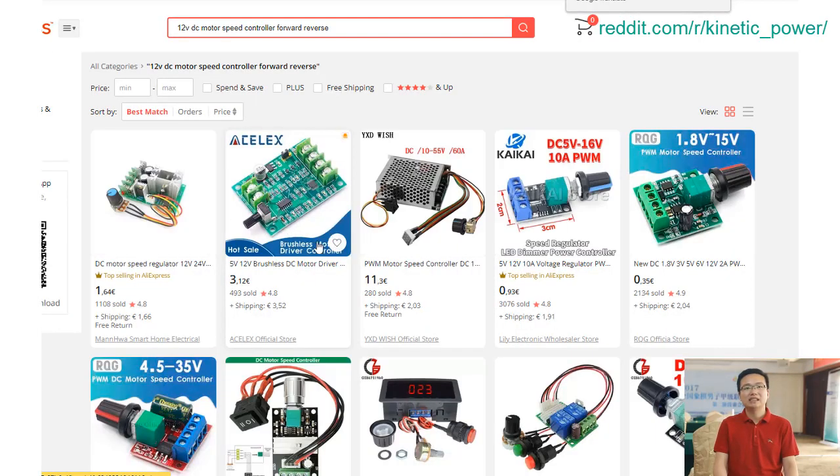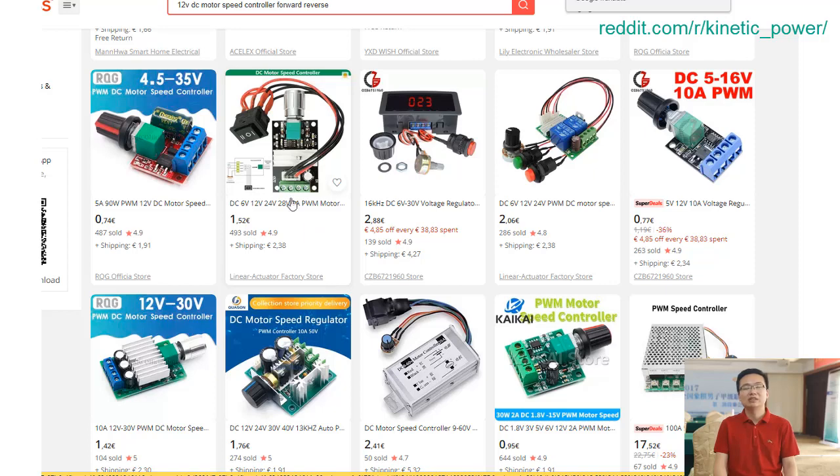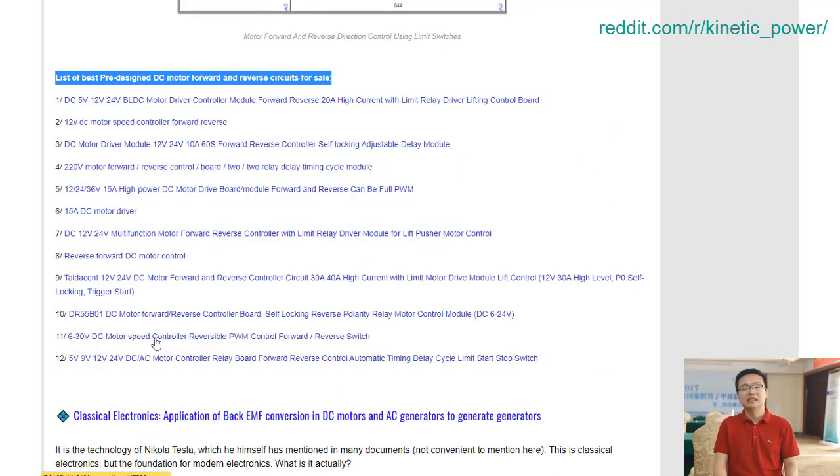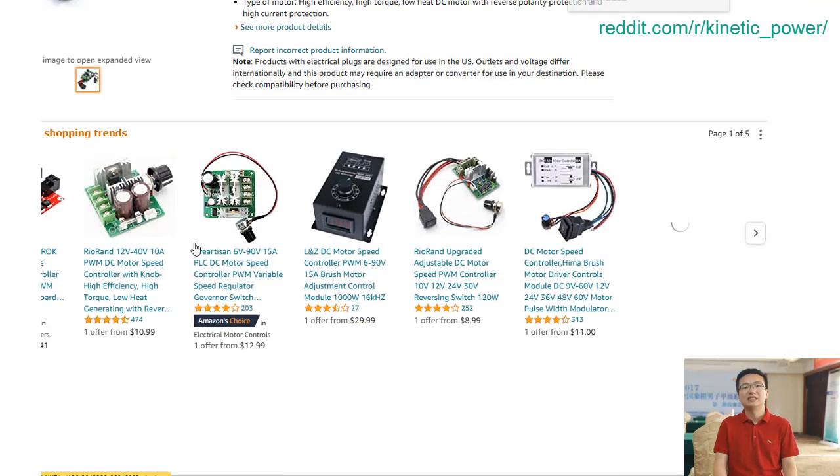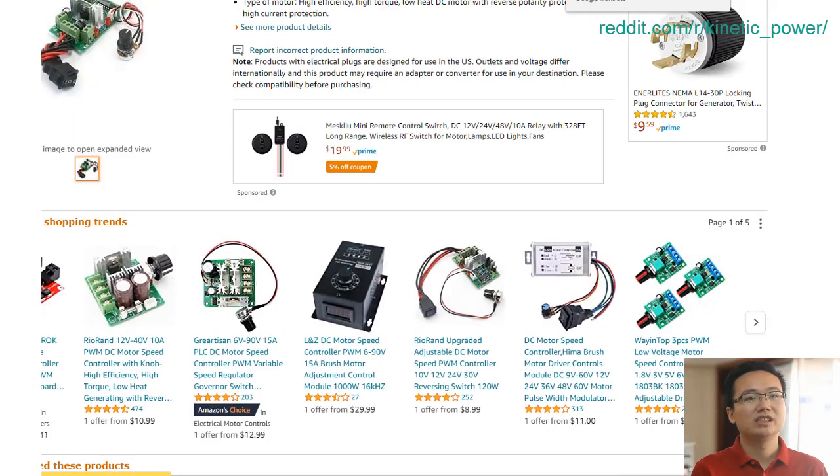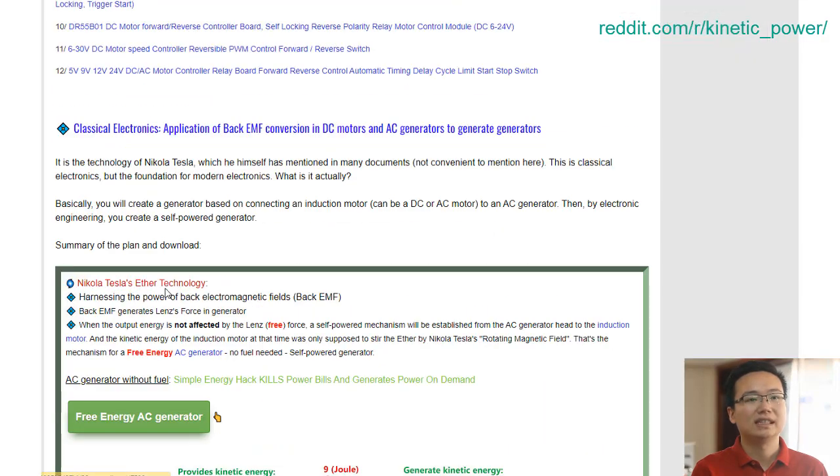When it comes to DC motors, a forward and reverse circuit is essential for efficiency and proper functioning. Now, thanks to the Arduino software, you can easily find the perfect electronic circuitry for your DC motor forward and reverse circuit.